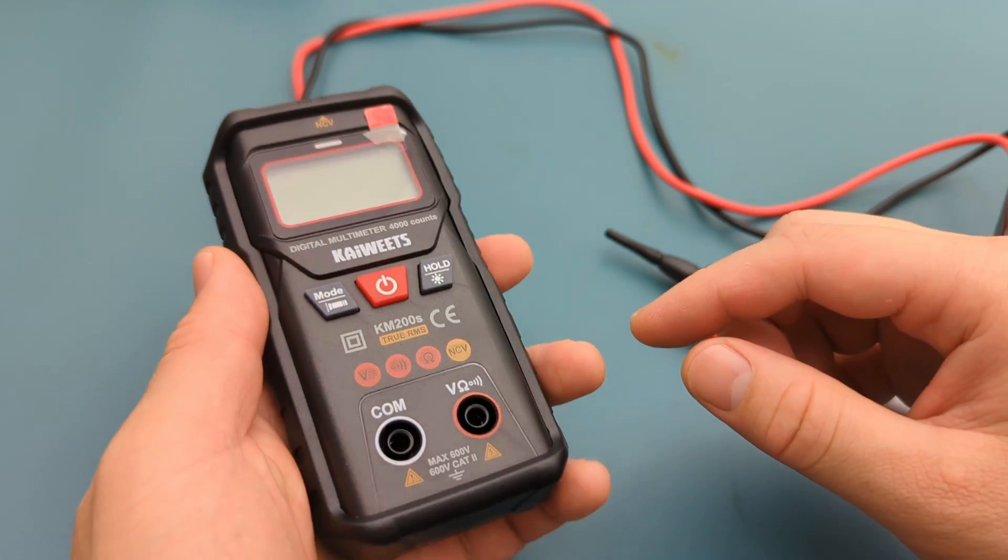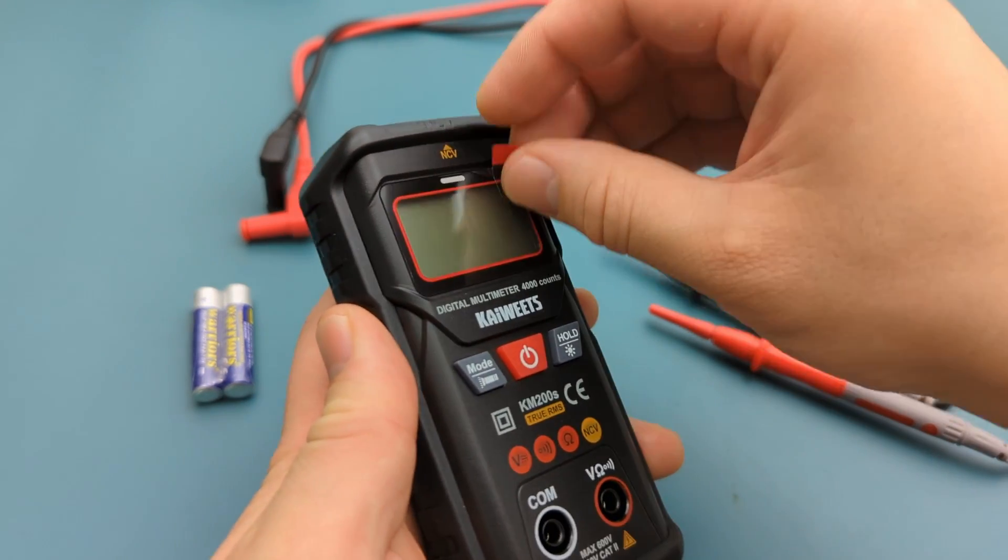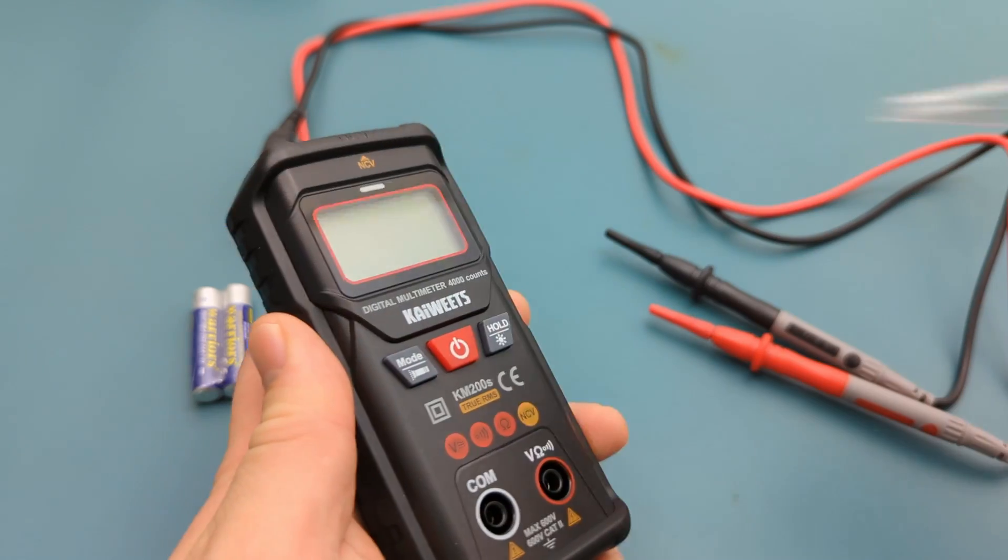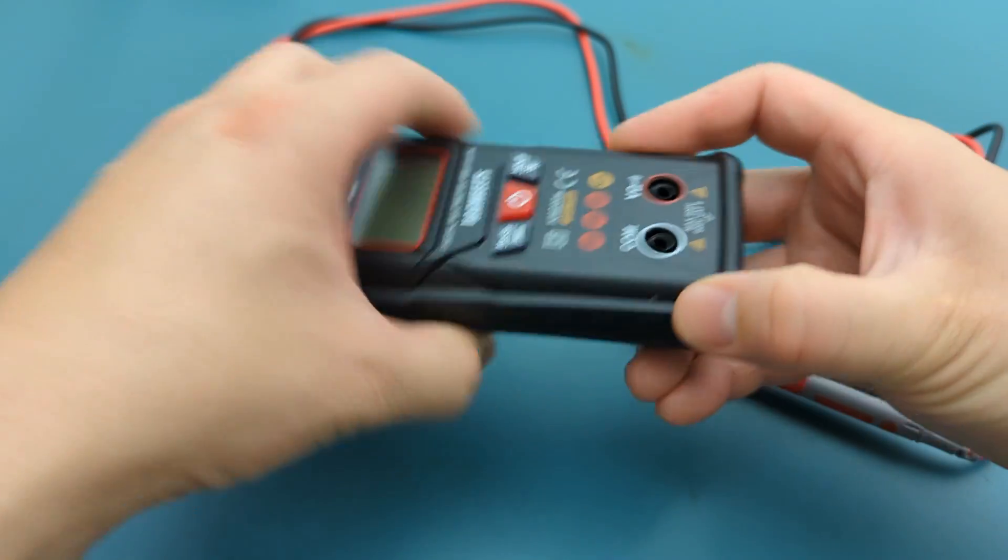The first thing you want to do is remove the plastic film from the display. The multimeter comes with a protective plastic case to shield it from accidental drops.